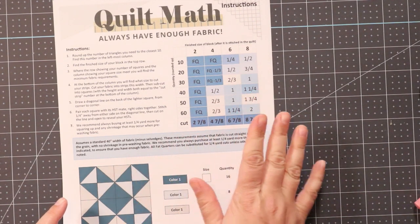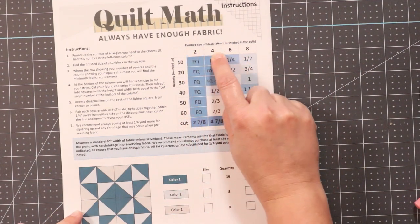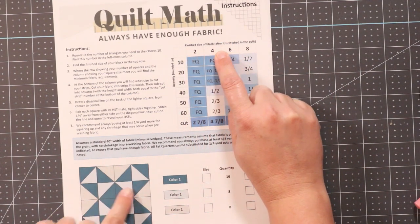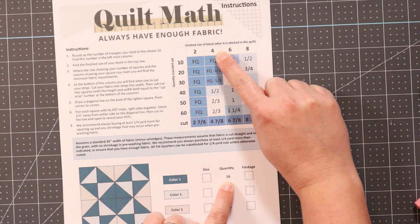The quilt math sheets are designed to be incredibly easy to use. You just know what size your finished block is going to be, so I know mine is going to be four inches, and of color one I have 16 half square triangles.